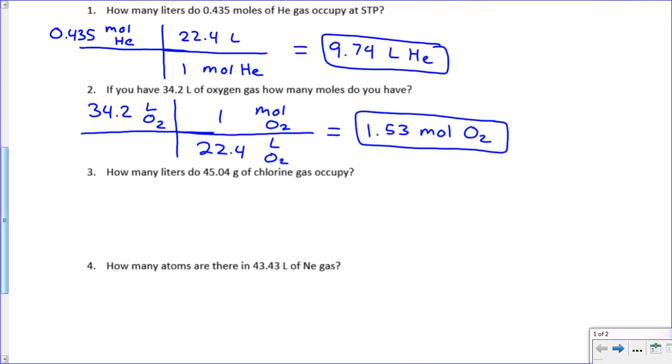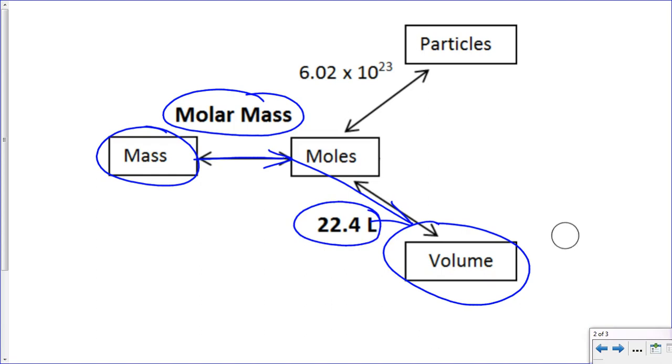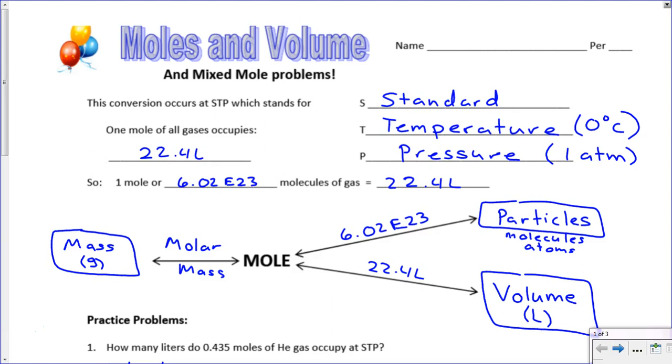Now for a more complicated problem, and I'm going to go through the flowchart on this one. So it says how many liters do 45.04 grams of chlorine gas occupy? So we're going from grams in this problem to liters. So when we think about our flowchart here, we're going from mass to volume. Now you can see that mass and volume are not directly related. In order to get from mass to volume, we have to go from mass to moles, and then we have to go to volume. So this is a two-step conversion. We use the molar mass to convert from mass to moles, and then we use 22.4 to convert from moles to volume. So in these longer problems, we need to consider process before we get started because, as I said, they're a little bit more complicated.